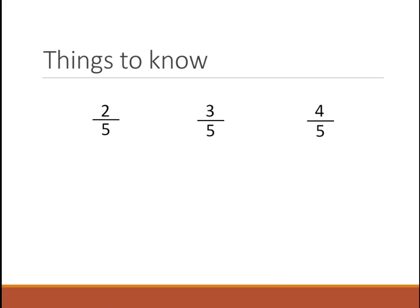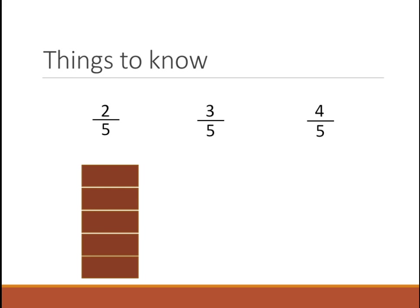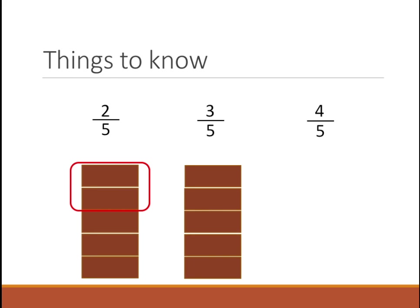Now there are a few things we need to know about like fractions. Let's say we have 2 by 5, 3 by 5, and 4 by 5. The 5 in the denominator tells us what we have in our hands, and the numerators 2, 3, and 4 tell us what we are interested in. For example, if we have 5 pieces of chocolate and we ate 2 of them, and in another case we have 5 pieces of chocolate again and we ate 3 of them.